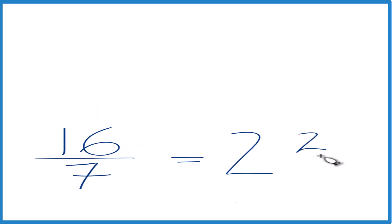Put that remainder here as the numerator. Bring the denominator across, and the fraction 16 sevenths, that equals the mixed number 2 and 2 sevenths, and we can check that.